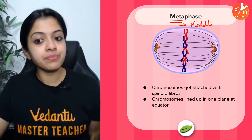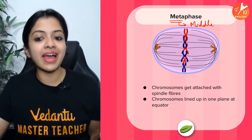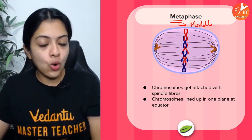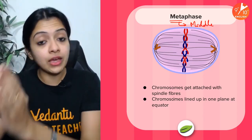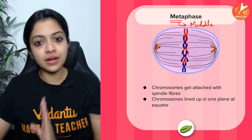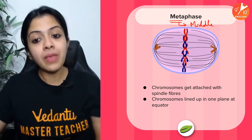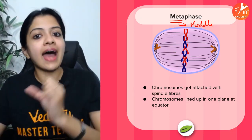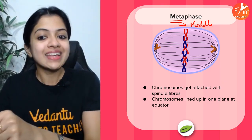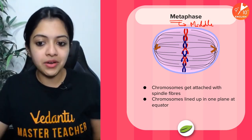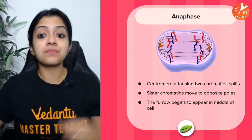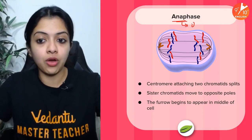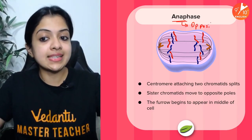Then comes metaphase — 'meta' stands for middle. True to its name, the chromosomes are aligned at the middle of the cell, at the equatorial plane, with the help of spindle fibers. The spindle fibers attach to the centromere, as visible in the diagram.